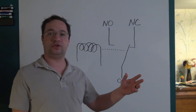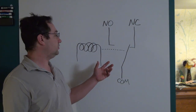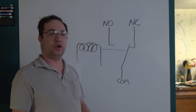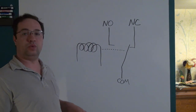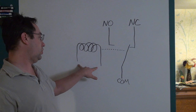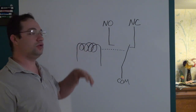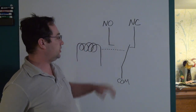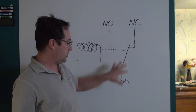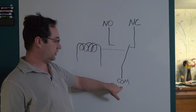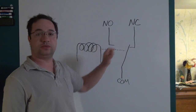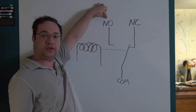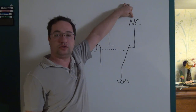What I have pictured here is the very basic anatomy of the simplest relay. You have a coil. When you apply power to that coil, it creates a magnetic field. Over on the other side, you have three contacts: a common contact which connects to a movable spring-loaded arm, a normally open contact, and a normally closed contact.